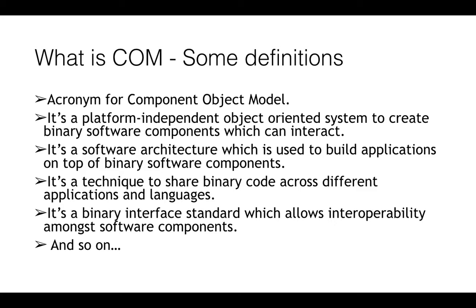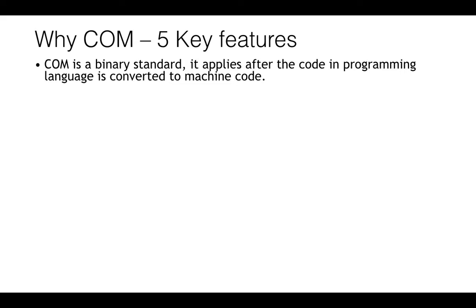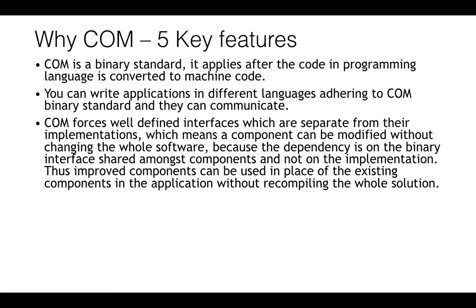There are multiple definitions of COM which describe its features and basic characteristics. Let's look at five key features of COM, or why COM is still in use. COM is basically a binary standard, and it applies after the code in a programming language is converted to machine code. So you can write applications in different languages adhering to the COM binary standard and they can communicate with each other.